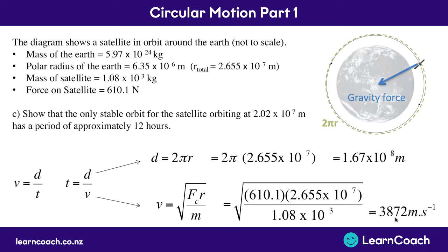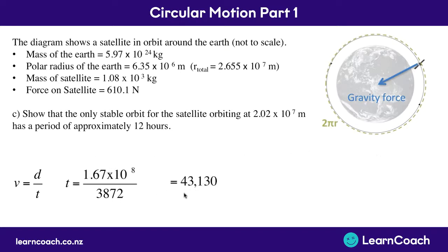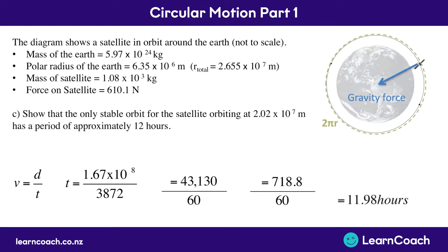Now that we have the distance and velocity, we plug them back into the time formula t = distance / velocity. This gives 43,130 seconds. Dividing by 60 gives approximately 719 minutes, and dividing by 60 again gives 11.98 hours — pretty much the 12 hours we were meant to show. This confirms the stable orbital period.